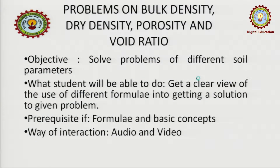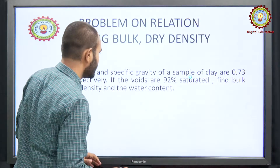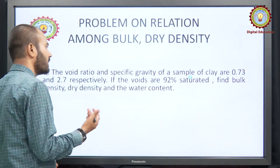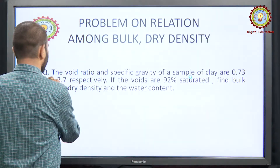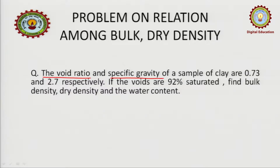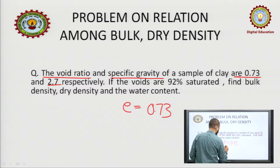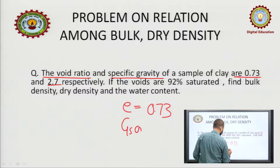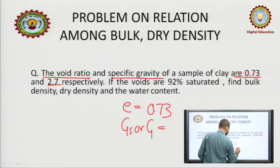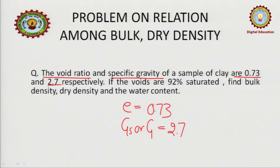We will solve the problems so that you get a clear view of how the formulas are used in actual practice. The first problem — this is an easy one. First of all, understand what is being asked: the void ratio and specific gravity of a sample of clay are 0.73 and 2.7 respectively, meaning E = 0.73 and Gs = 2.7.